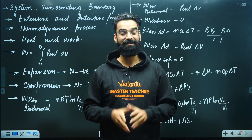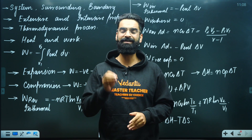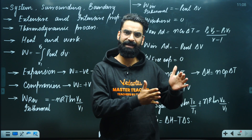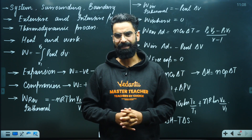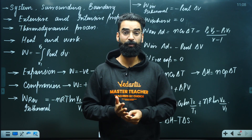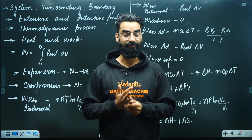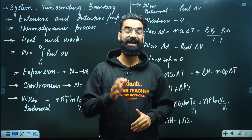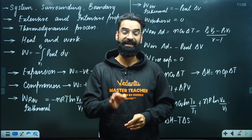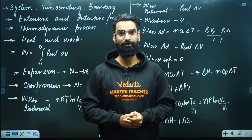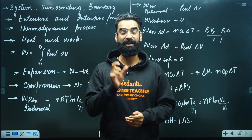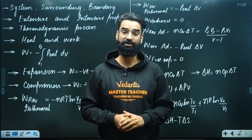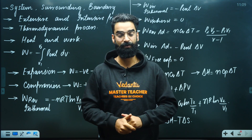Talking about internal energy. Internal energy is basically the sum of all possible energies present in the system — the sum of all kinetic energy and potential energy. Internal energy is a state function and an extensive property. For a cyclic process, the change in internal energy is equal to zero. For a real gas, internal energy depends on volume and temperature; for an ideal gas, it depends only on temperature. To calculate ΔU for an ideal gas: ΔU = nCvΔT (if Cv is constant). For an ideal gas undergoing an isothermal process, ΔU = 0.